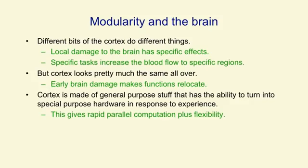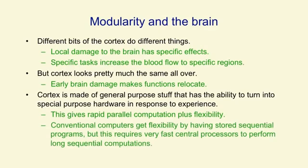This suggests the cortex is made of general-purpose stuff that has the ability to turn into special-purpose hardware for particular tasks in response to experience, giving a nice combination of rapid parallel computation once you've learned, plus flexibility to learn new functions. It's quite like an FPGA, where you build some standard parallel hardware and then put in information that tells it what particular parallel computation to do. Conventional computers get their flexibility by having a stored sequential program, but this requires very fast central processors to perform long sequential computations.